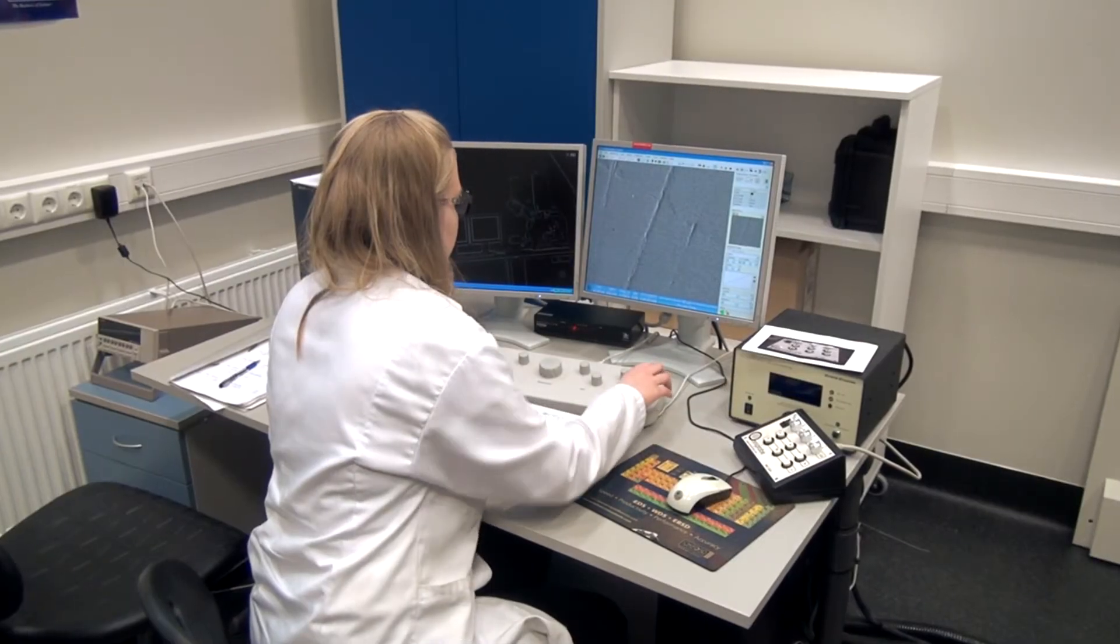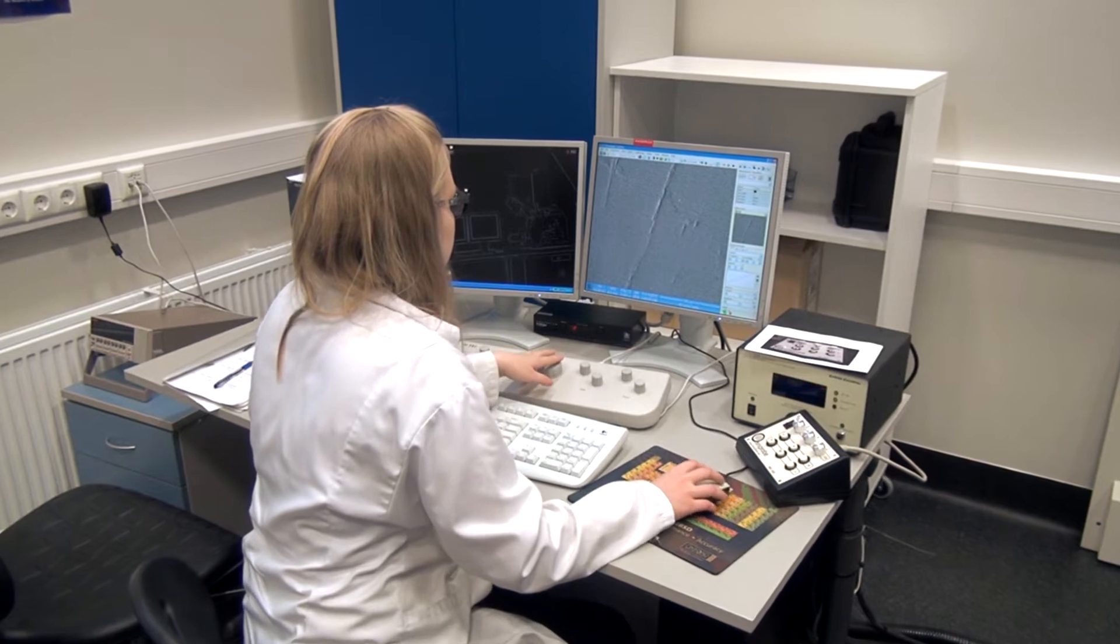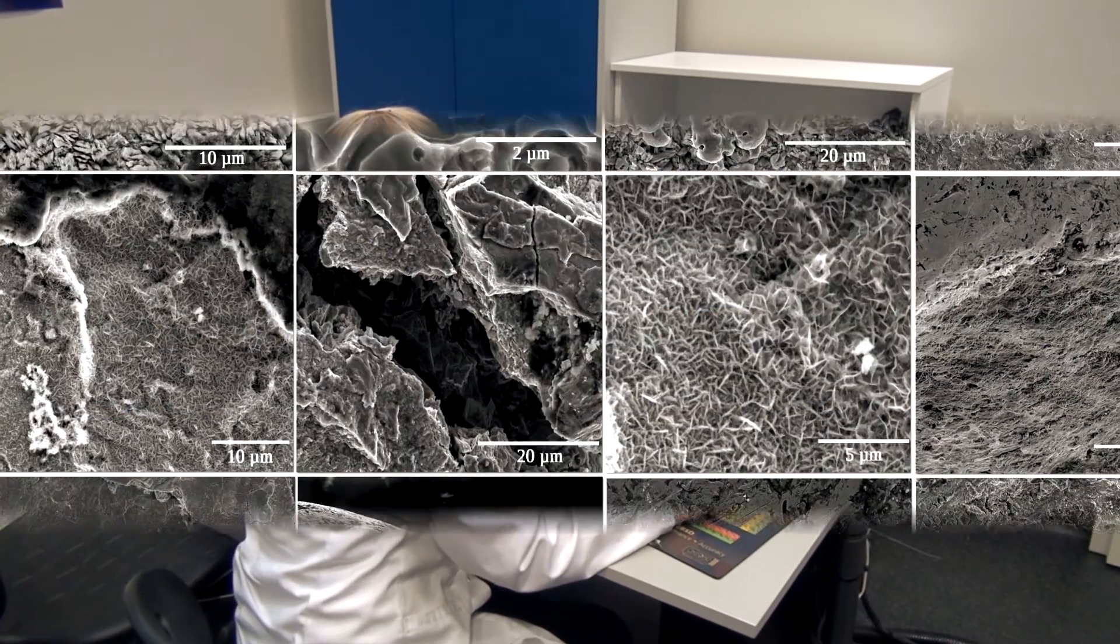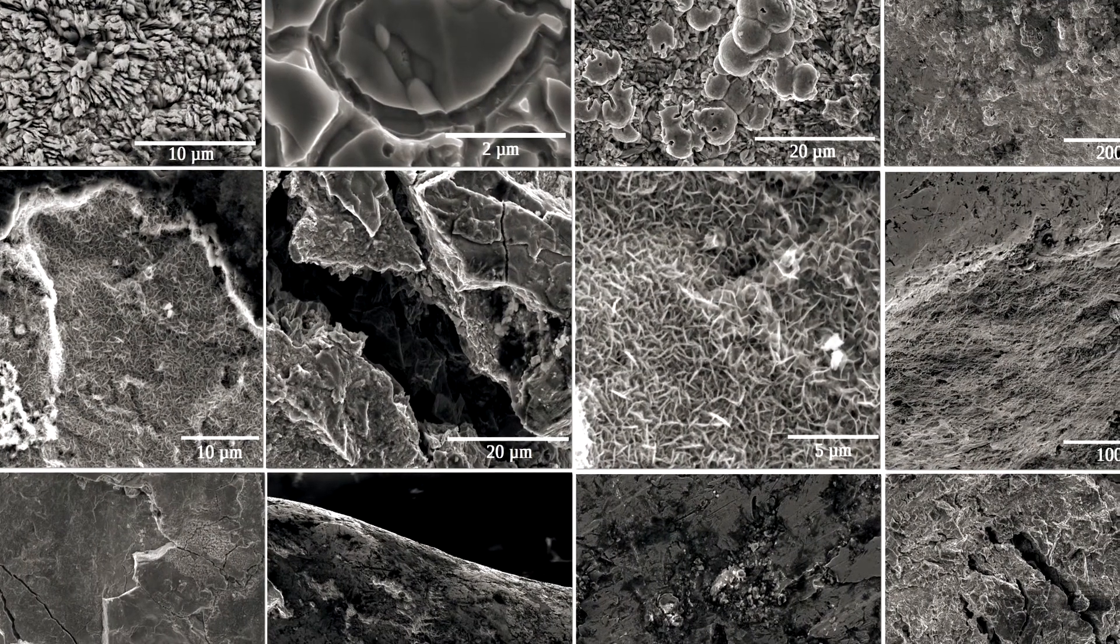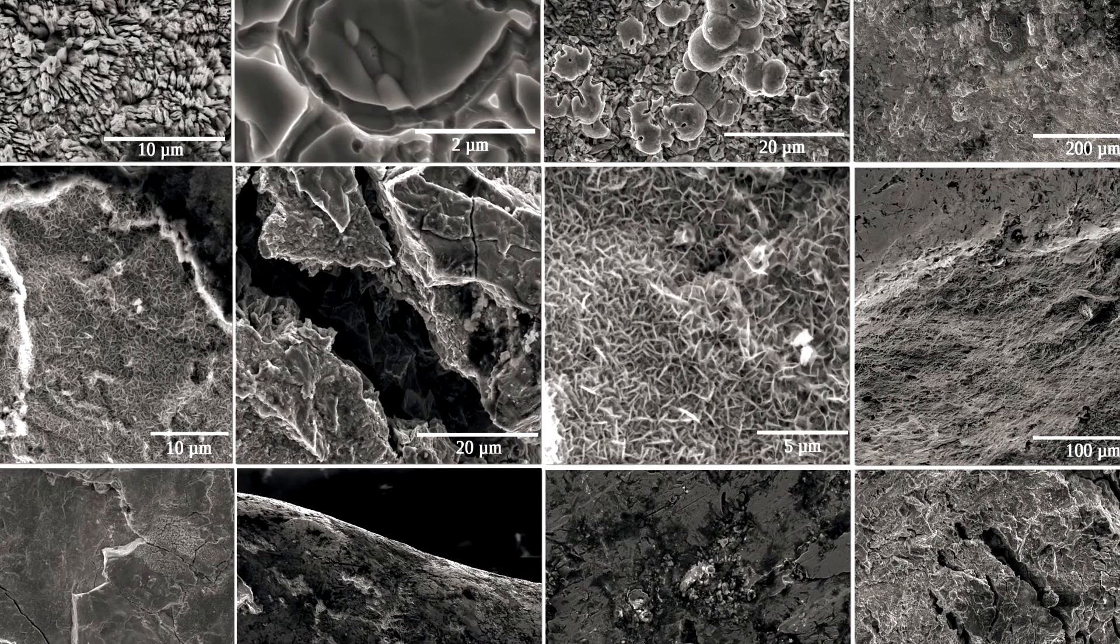Now that the meteorite is back in its natural environment of vacuum, similarly to space, we can take a closer look at its surface. Already at the first glance, we noticed that the surface is covered with peculiar topographic features and each part of the meteorite appears to be completely unique.